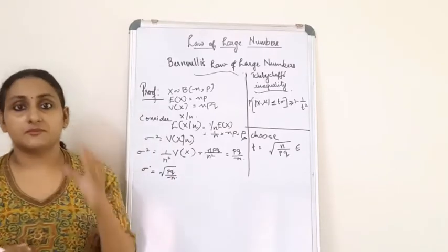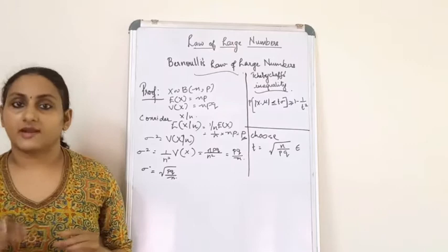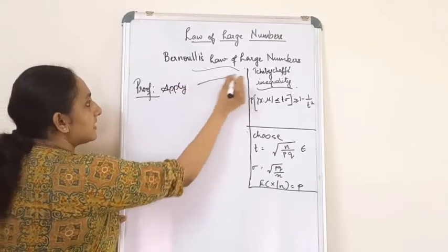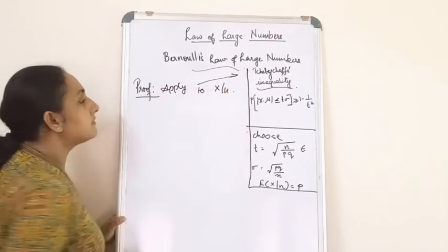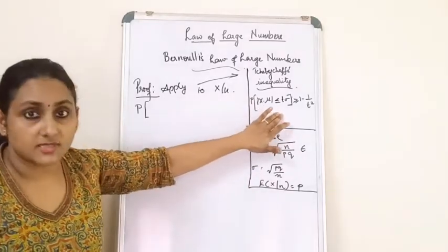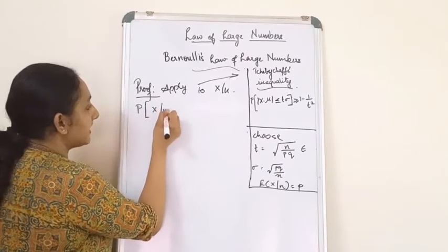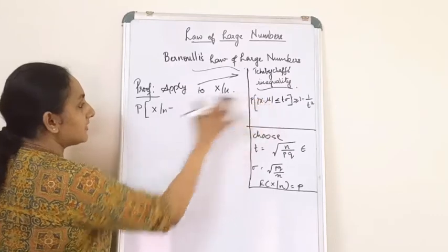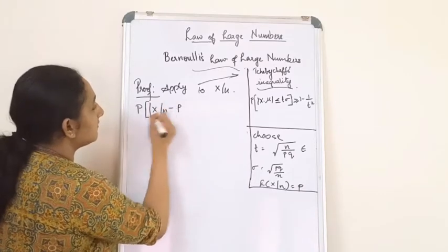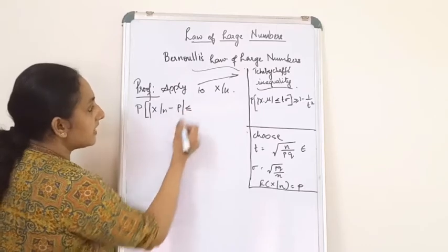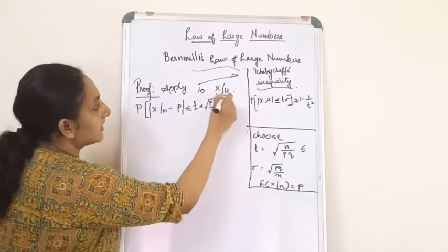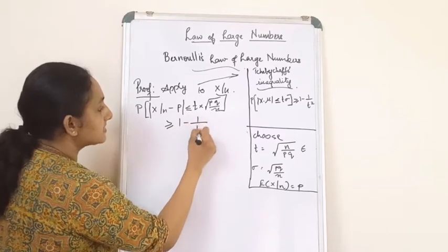Now I am going to apply Chebyshev's inequality to the random variable x/n. Using the second form of Chebyshev's inequality: the probability of |x/n − mu| greater than or equal to T times sigma is greater than or equal to 1 minus 1/T². Here mu = p and sigma = sqrt(pq/n), so the probability of |x/n − p| greater than or equal to T times sqrt(pq/n) is greater than or equal to 1 minus 1/T².